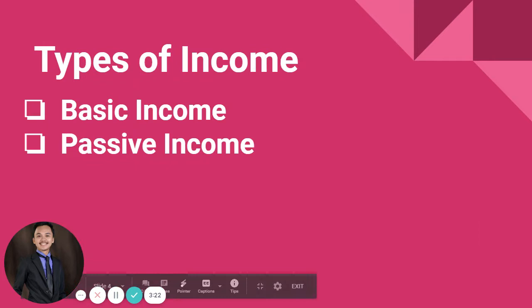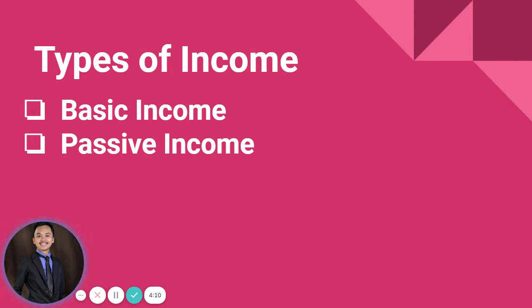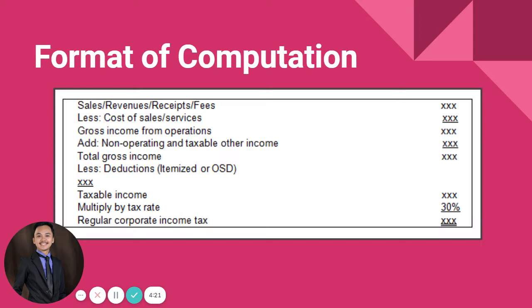Let's proceed with the types of income a corporation may earn: basic income and passive income. Basic income for a corporation comes only from the operation of business, since a corporation cannot earn compensation income nor professional income. Corporate taxpayers may also earn passive income, and just like individual taxpayers, passive income will be taxed separately and will not be combined with basic income.